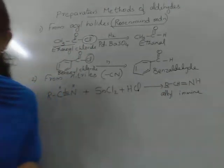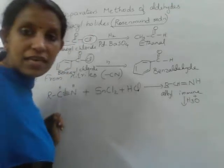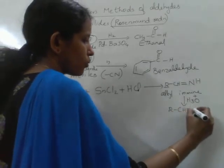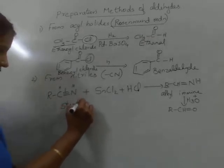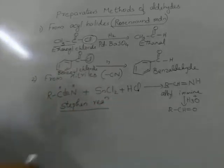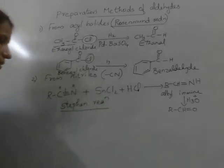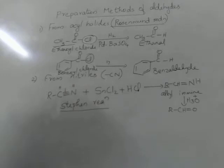An alkylimine is formed in the first step. This alkylimine undergoes acid hydrolysis — H₃O⁺ — to form the aldehyde, RCHO, as the product. This reaction is known as the Stephen reaction. Name reactions are particularly important. Cyanides or nitriles when reacted with stannous chloride and HCl are reduced to aldehyde through the formation of an imine. This reaction is called the Stephen reaction.